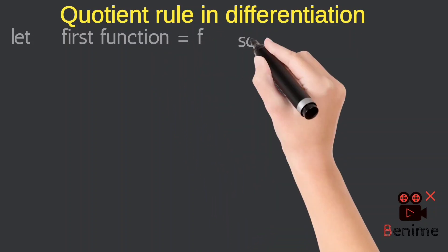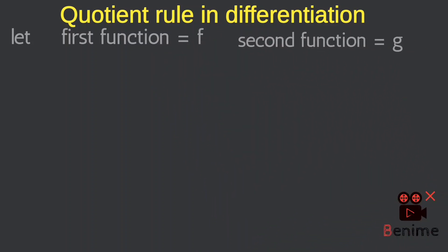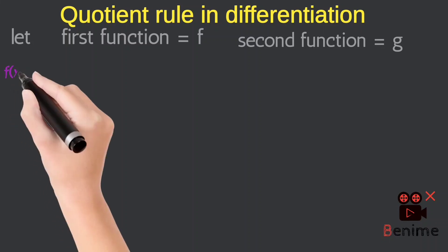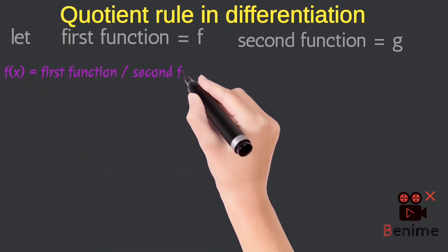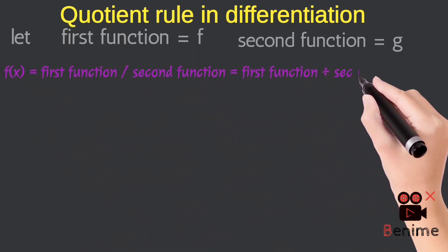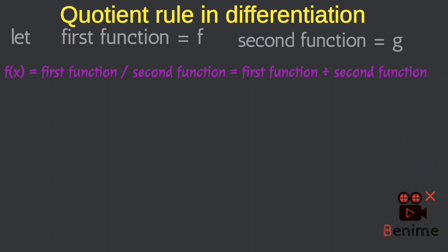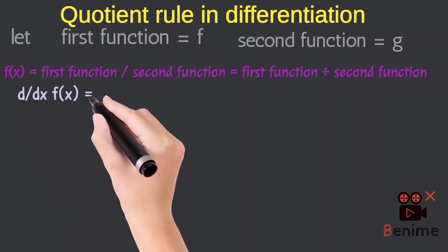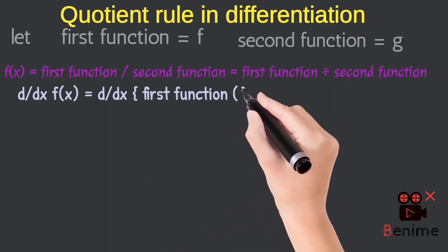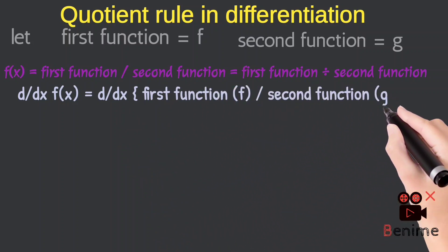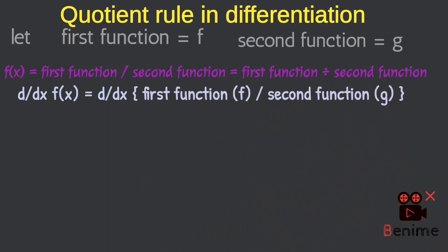For the general method, we will consider two functions: first function F and second function G. The general form of the quotient is F of X equal to the first function divided by the second function, separated by a division sign. I will differentiate with respect to X — you can differentiate with respect to any variable — so d/dx of F divided by G.